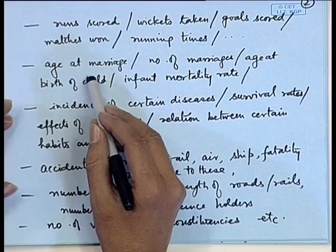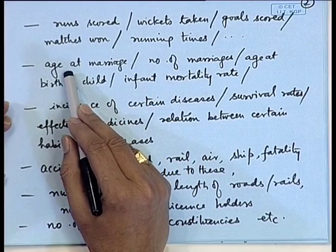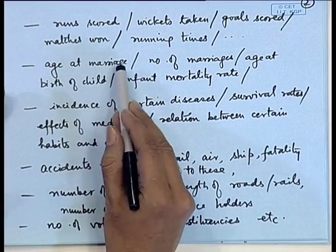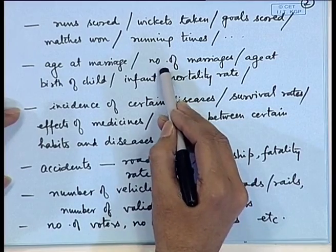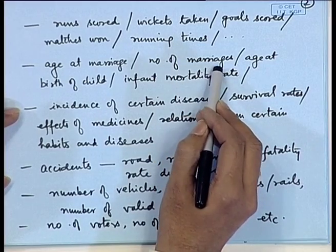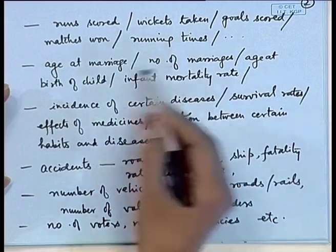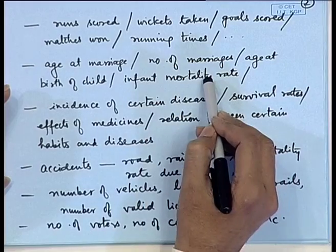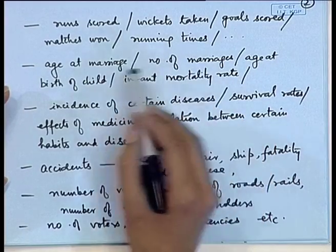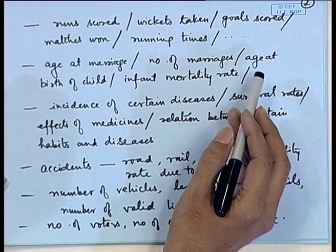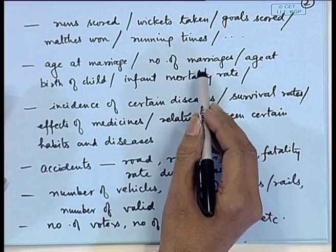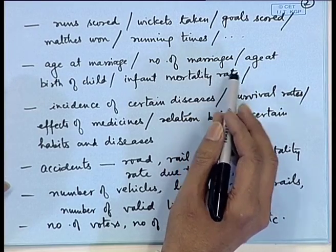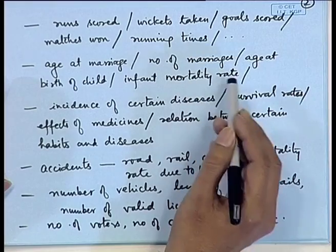In social studies, we may keep records of the age at marriage of women and men, how many marriages a person does in a lifetime, what is the age of parents at the birth of a child, and what is the infant mortality rate. Various statistics of this kind are helpful for formulating cultural and social policies by the government for health, family welfare, and various other things.